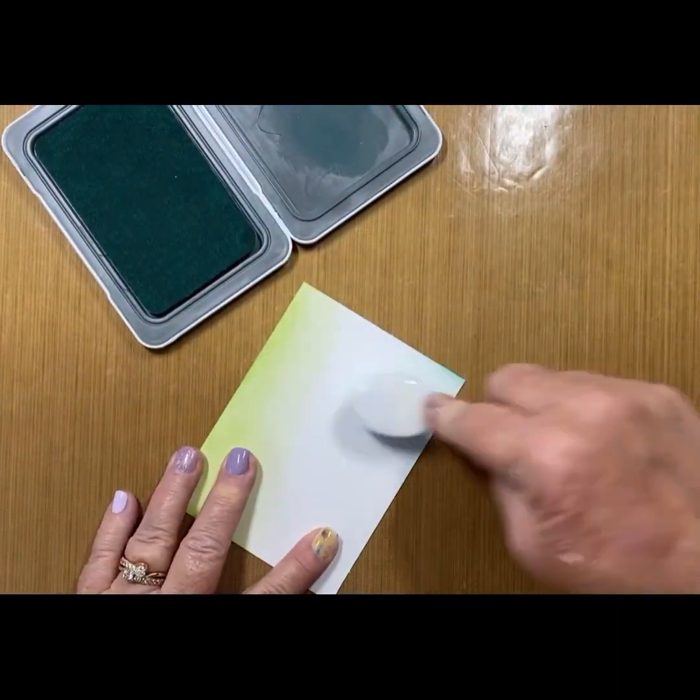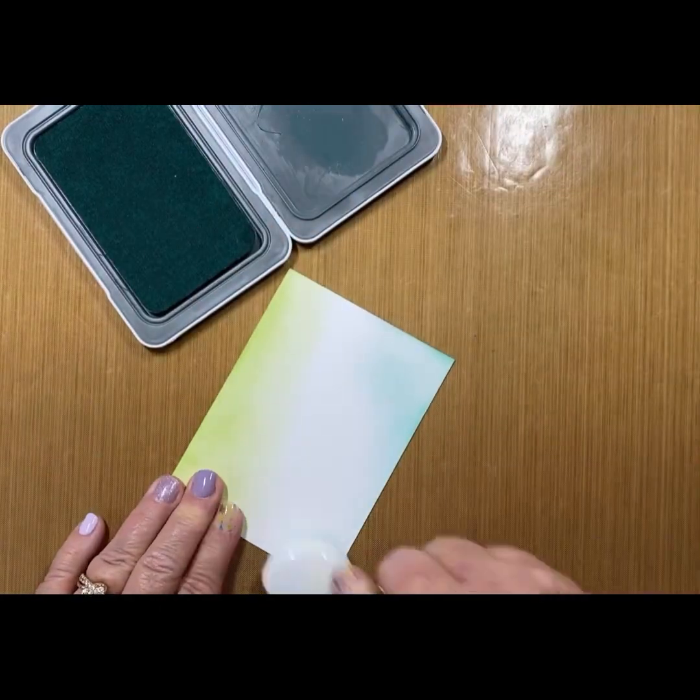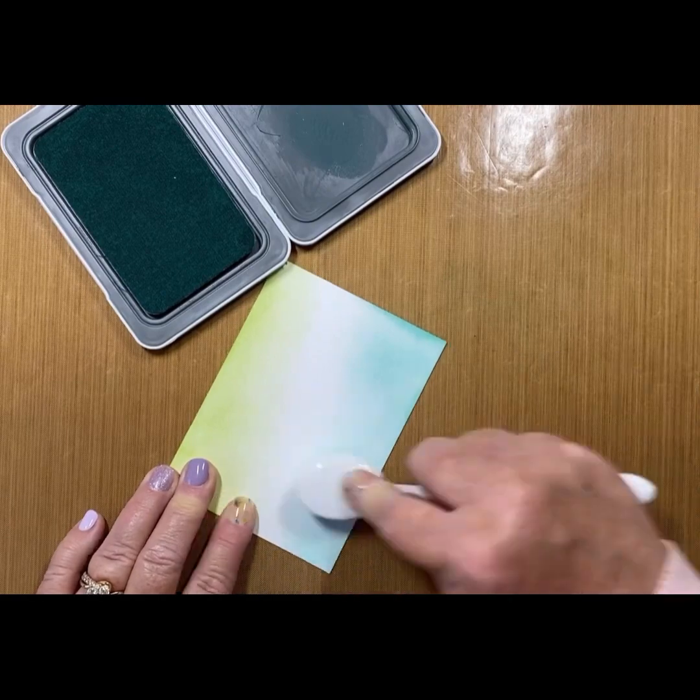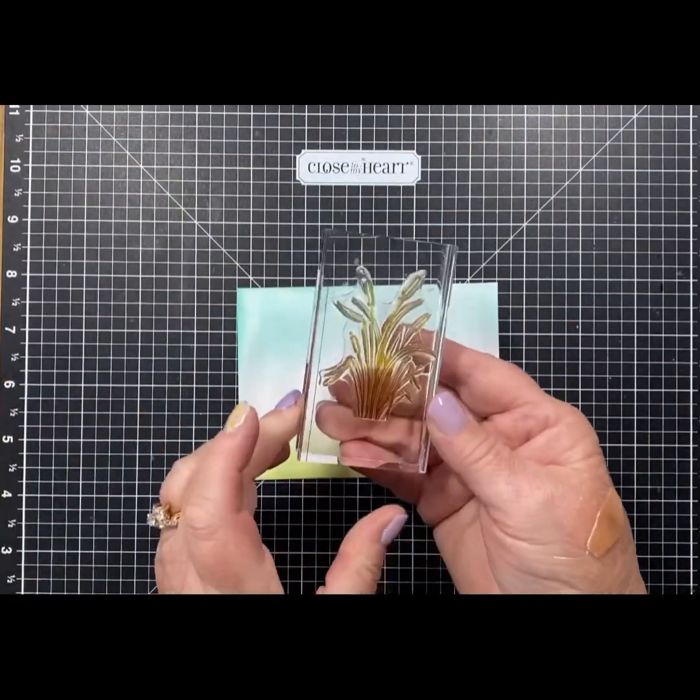In between colors, I'm going to wipe the table off so that I don't mix any of that ink together. So we've got a little bit of Limeade on the bottom like grass and Glacier on the top.